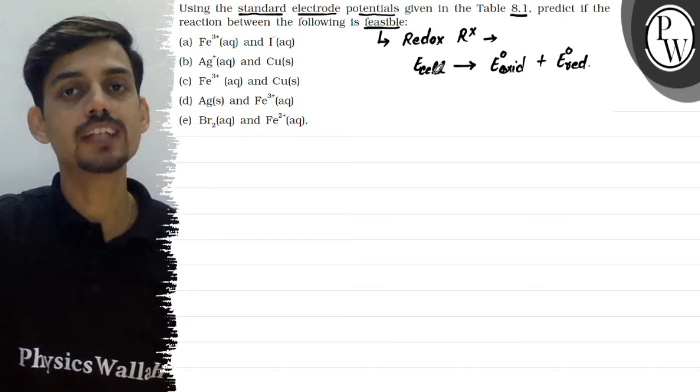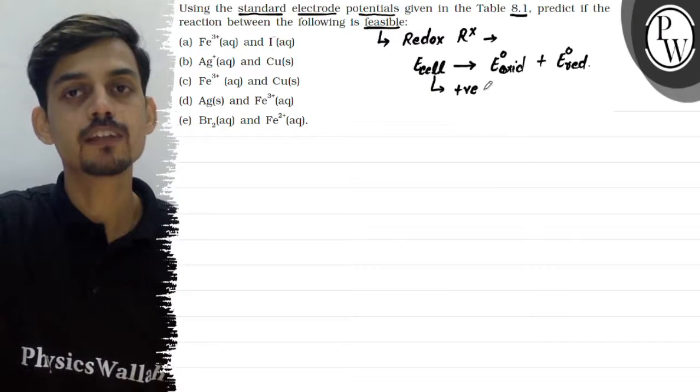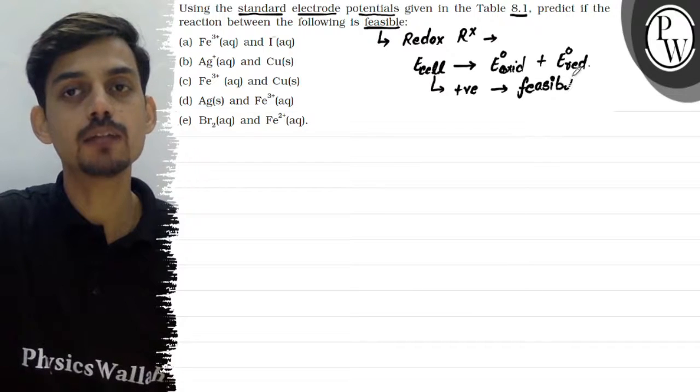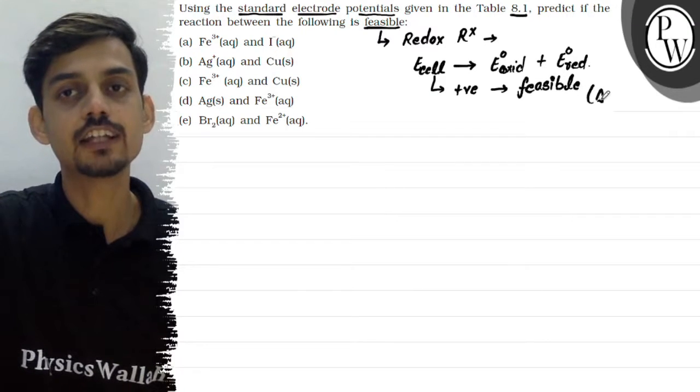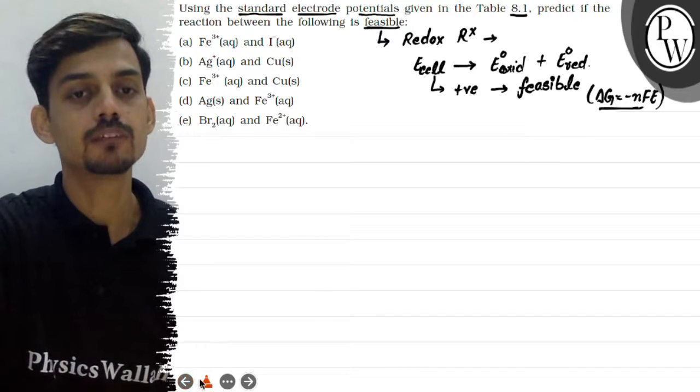Inhi ke summation ko bolte hain cell potential. And if the cell potential is positive, then only the reaction will be feasible or spontaneous. Tab cell potential positive hooga, tabhi hamare paas delta G negative hai. And delta G negative indicates the feasibility of a reaction. Delta G is equal to minus NF.